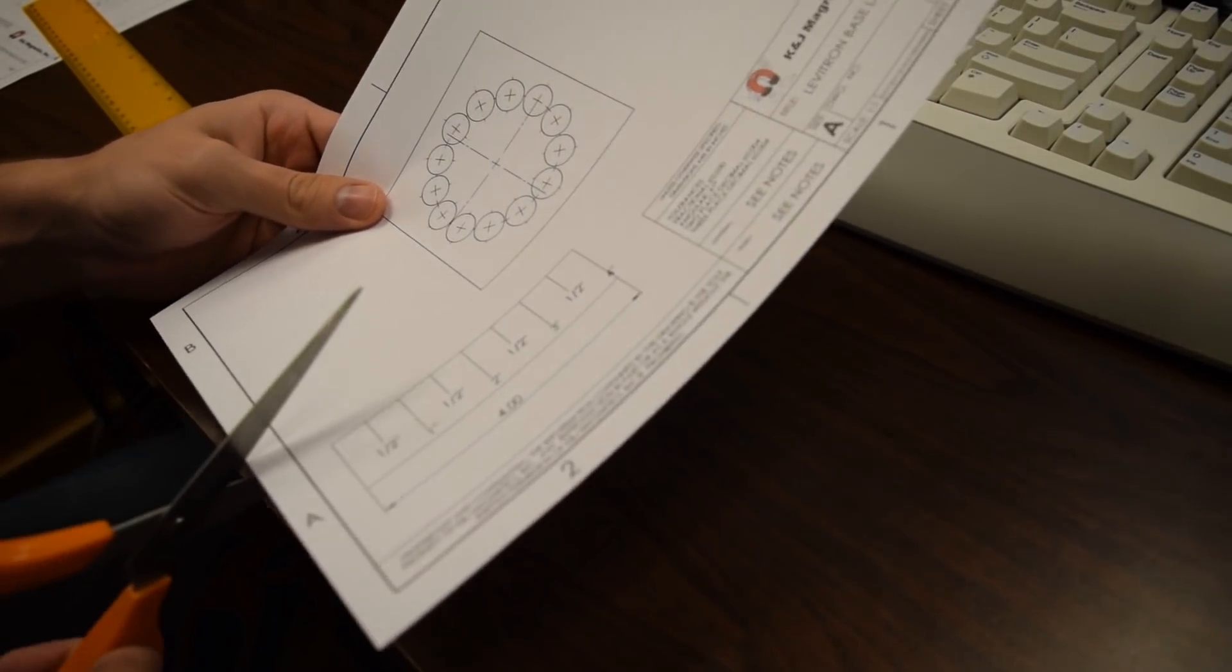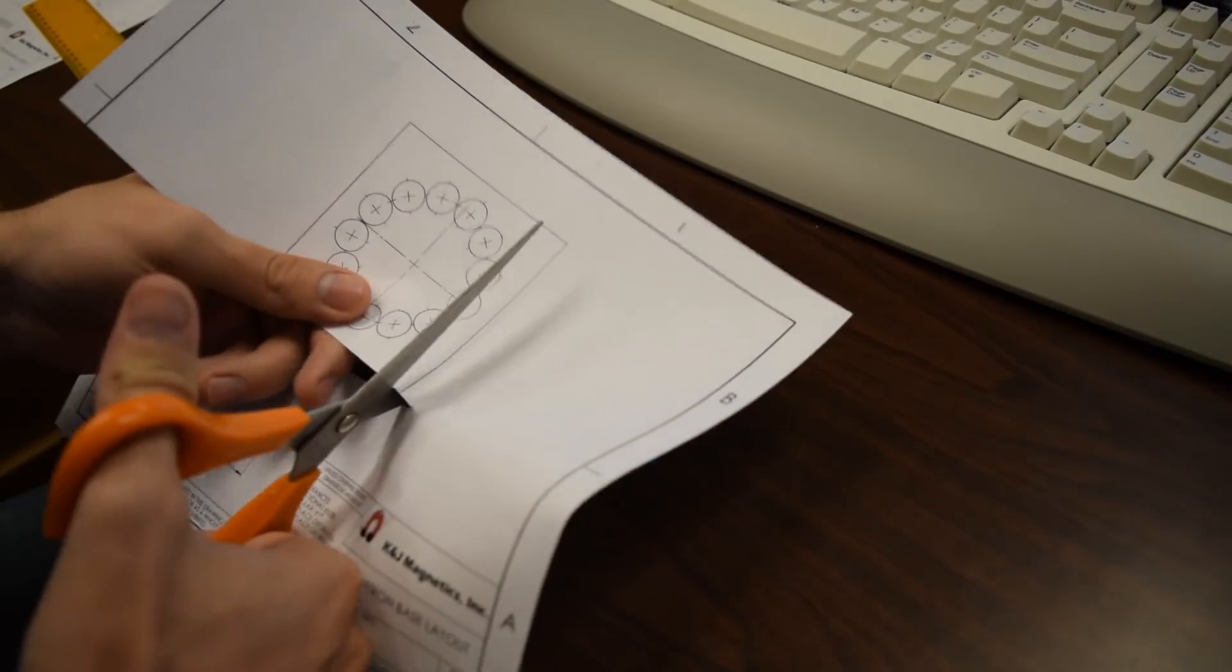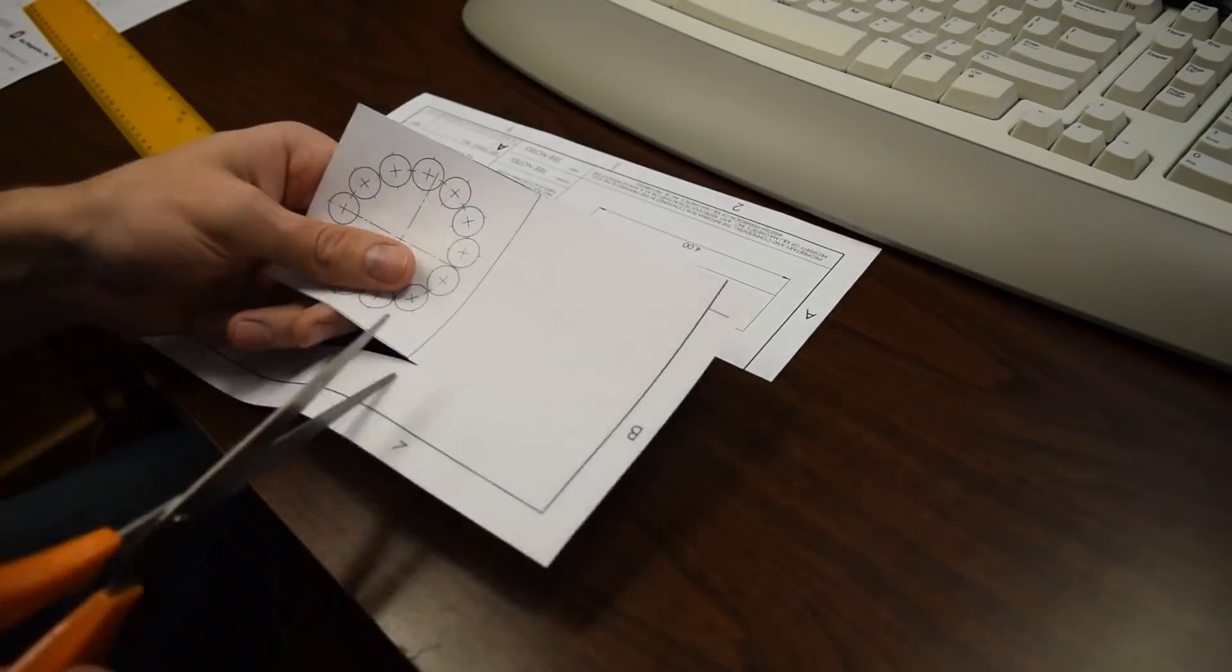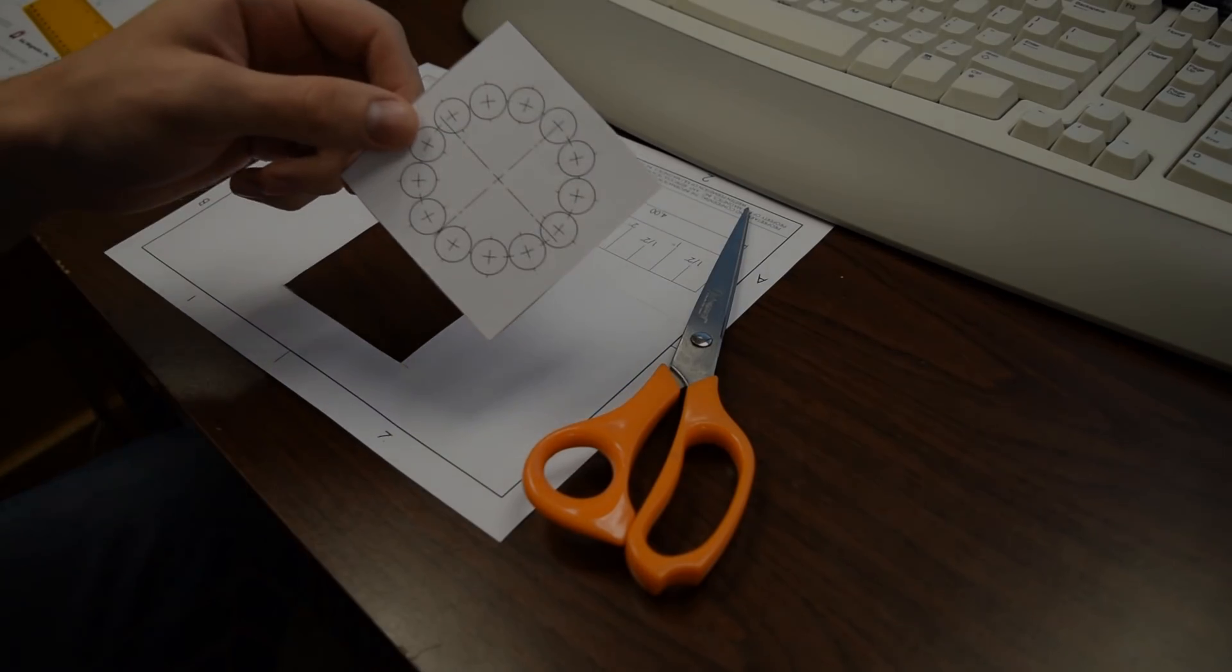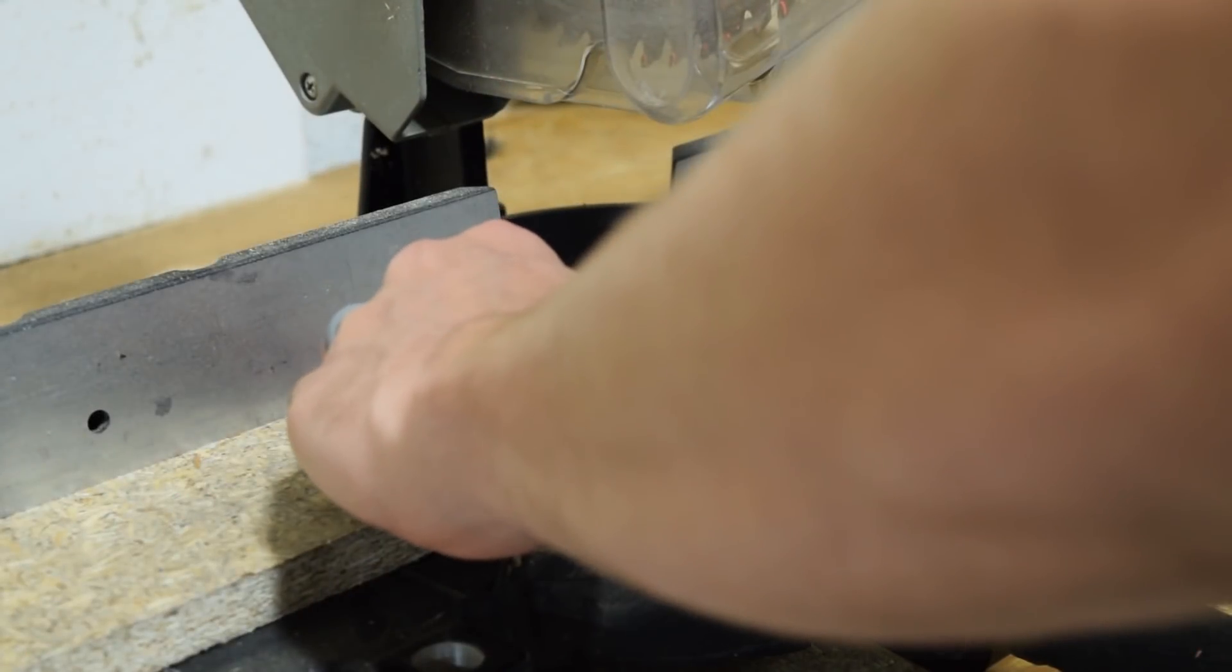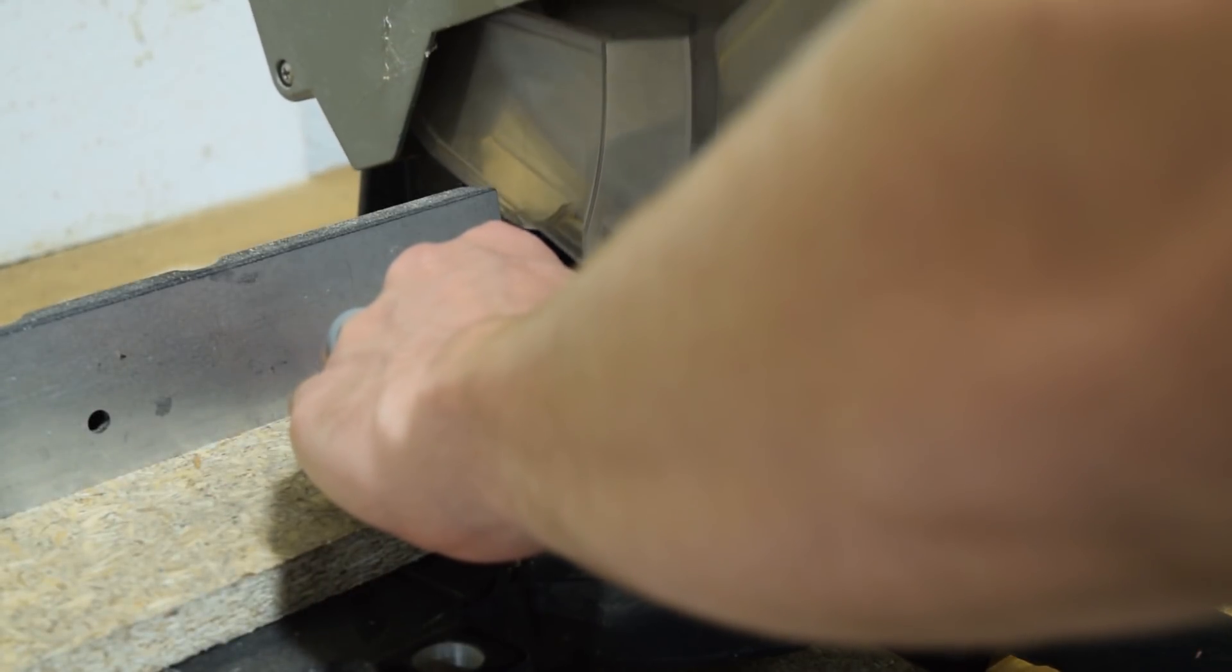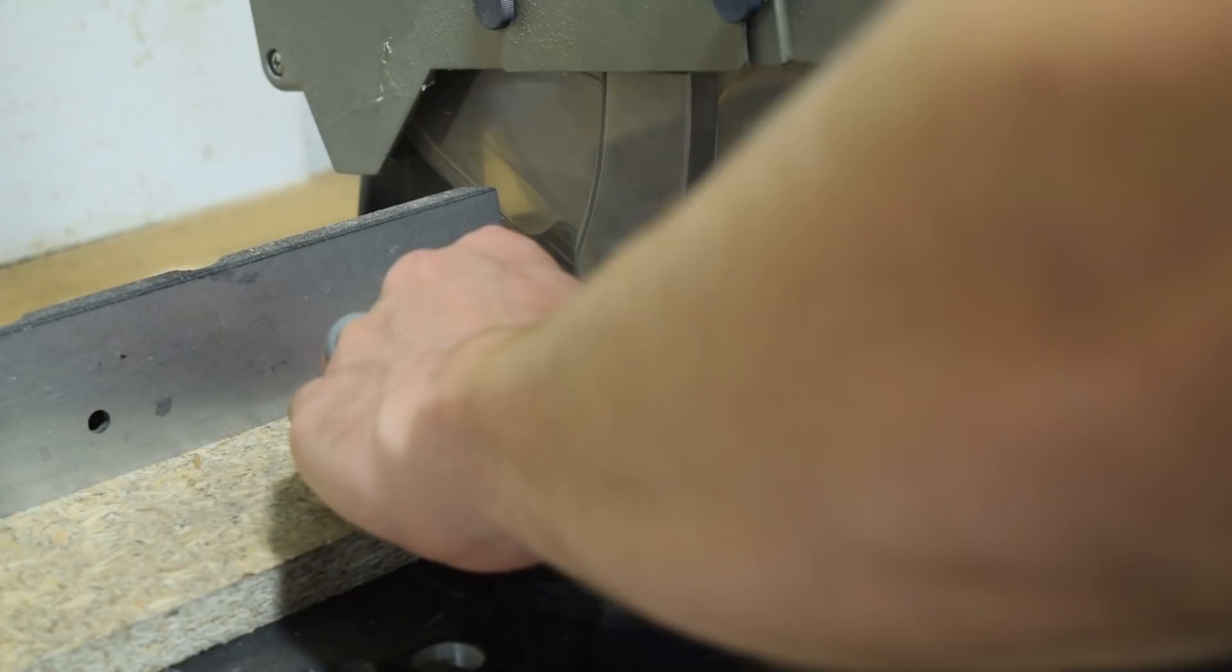As I mentioned, the base has 13 ring magnets. You can print out this layout from our website. You can simply print it out and cut it out. And then cut a piece of wood to match the size of the layout. It's about 3 inches by 3 inches.